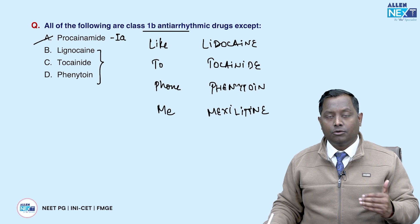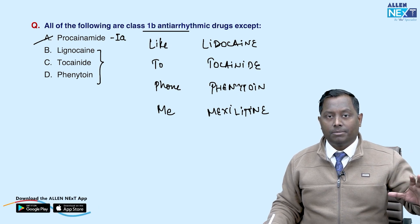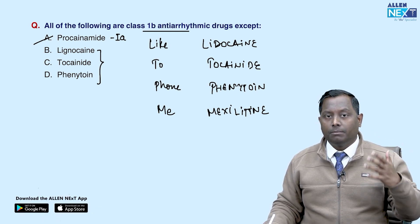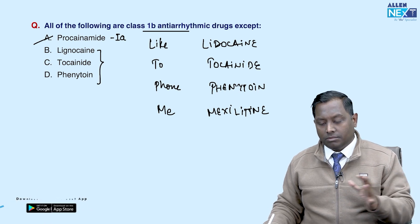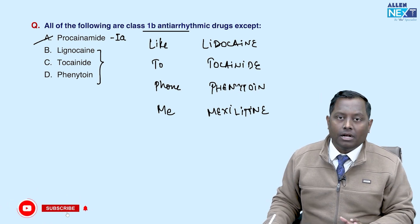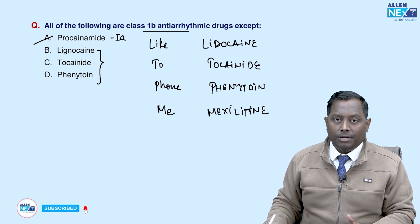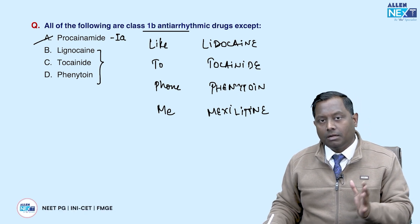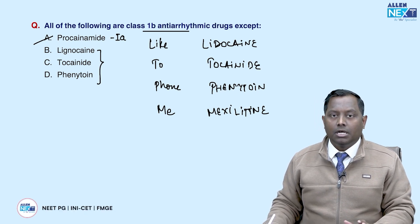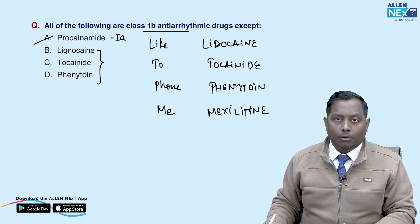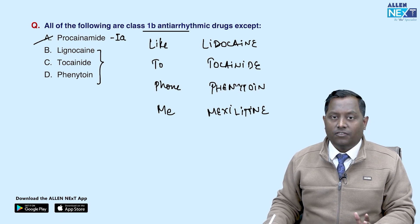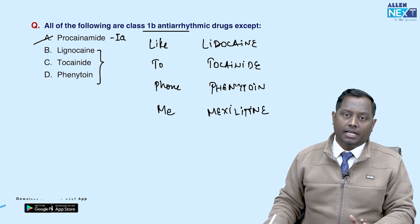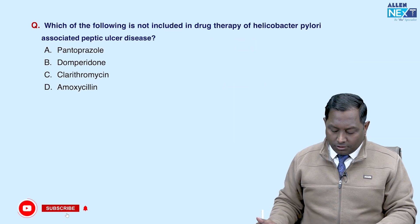Recap: Class 1a drugs — 'A-grade people: queen, prince, and dasi' — quinidine, procainamide, disopyramide. Class 1b — 'brave ones, like to phone me' — lidocaine, tocainide, phenytoin, mexiletine. Class 1c — 'C-grade doing cleaning work, flipping and mopping' — flecainide, propafenone, moricizine.